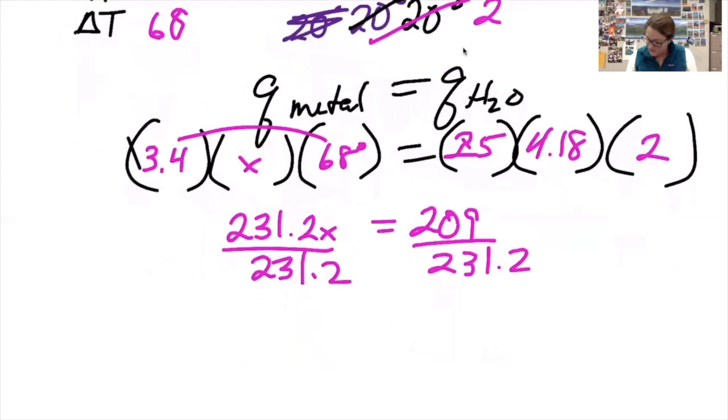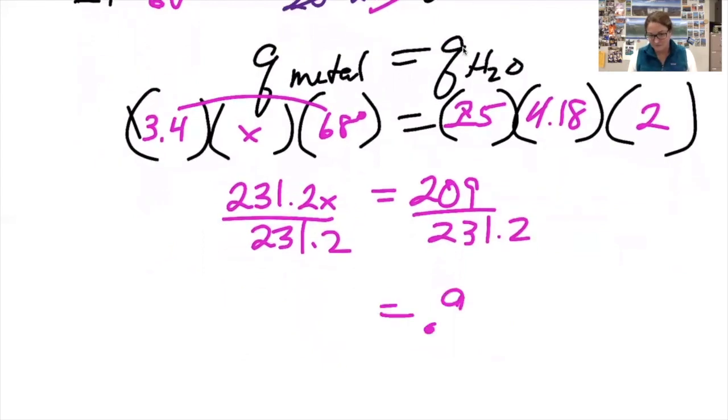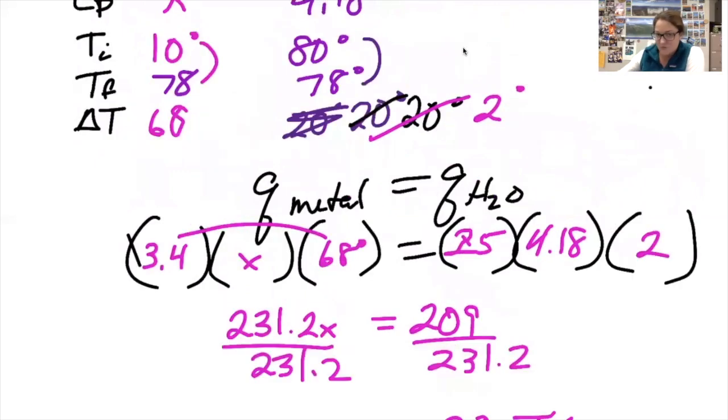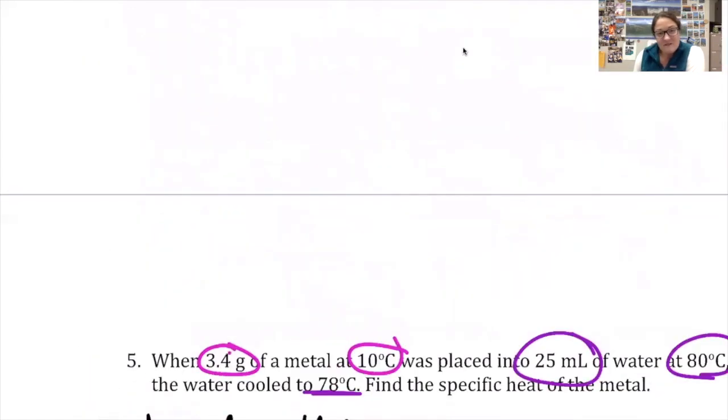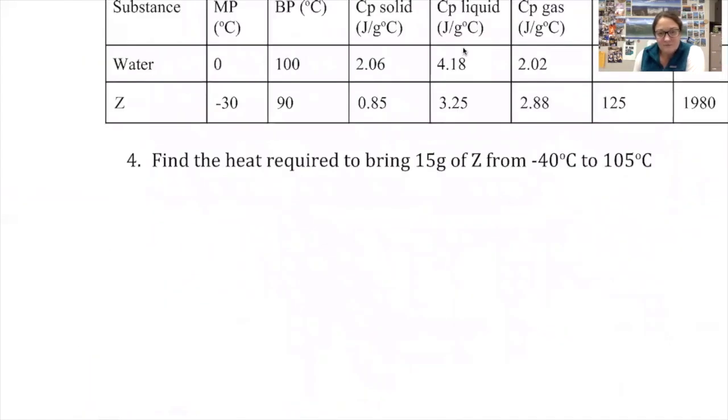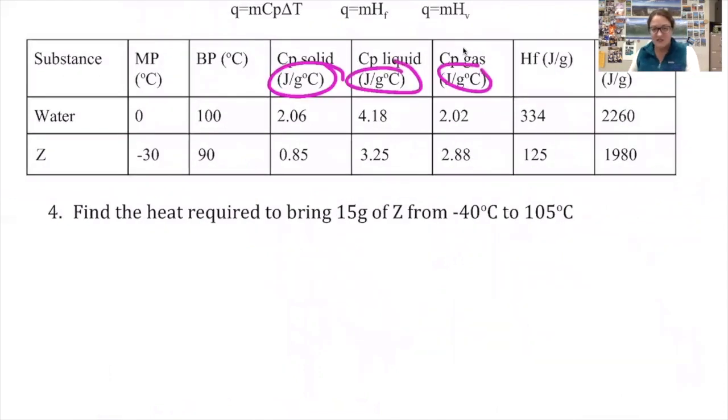Giving me a specific heat of 0.9. The units of specific heat are joules per gram degrees Celsius. You don't need to memorize that because we always give you this table, and this table shows you the units for specific heat to use.